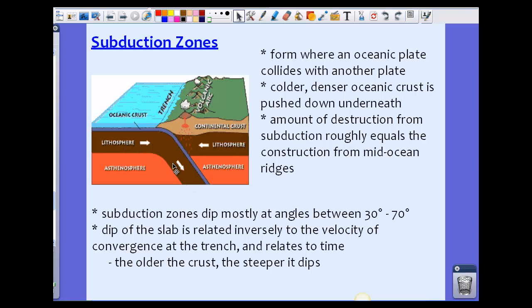If this were an extreme dip, like maybe closer to 70 than 30, that would mean it's a little bit older. Basically, it's being pulled more because of time. The older the crust there, the steeper the dip is going to be.